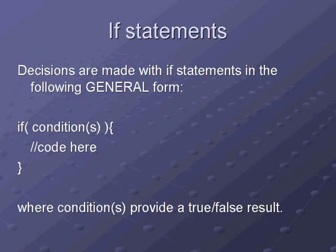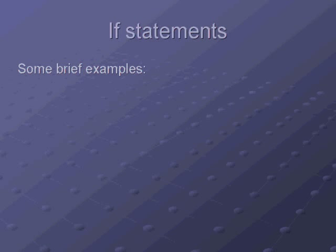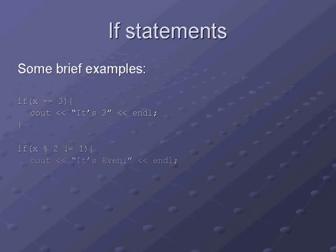So some brief examples: if X is equal to three, see out a message 'it's three' or something simple. Another one could be if X mod 2 doesn't equal one, that's another way of saying it's an even number.